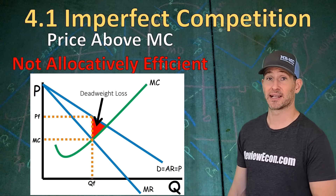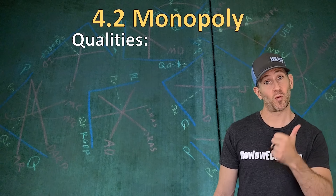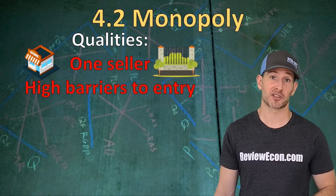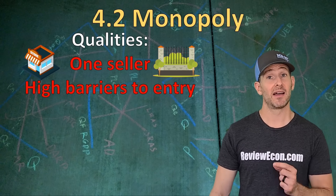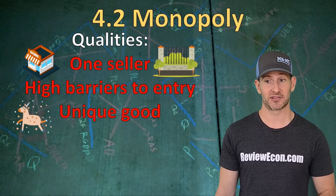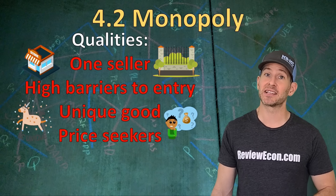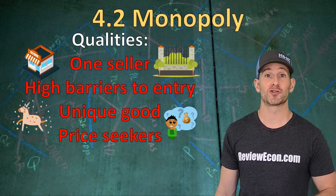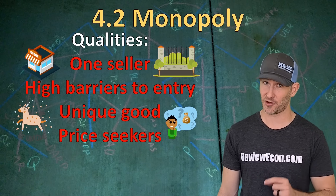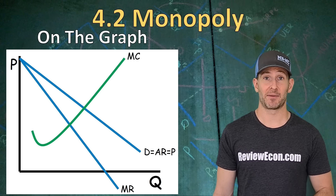There's your deadweight loss right there. Next, we're going to focus specifically on monopolies. There's one seller in a monopoly. High barriers to entry make it impossible for others to enter the market. This firm produces a unique good without any close substitutes. These firms are price seekers — they don't have to get the price from the market. They are driven by the demand curve they have and will price as much as they can for the quantity they produce.